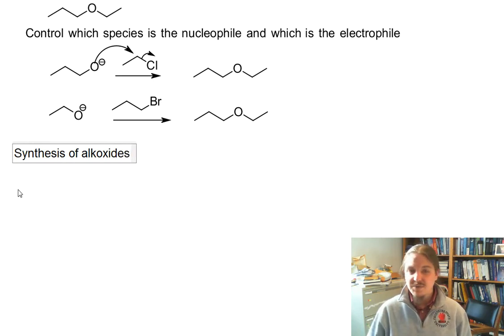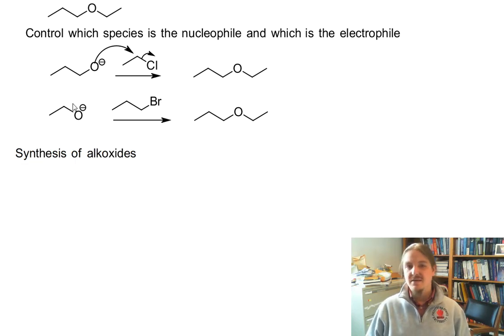With few exceptions, these alkoxide anions are not things that you can buy and store. They need to be made in the context of the reaction or, using the fancy organic chemistry parlance, in situ - in the situation right there. And there are two ways that this can be done.